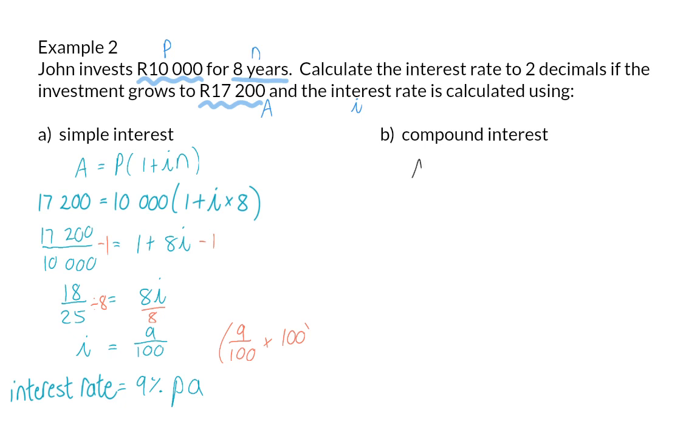In part B we are going to make use of the same information but now with compound interest which means N is now in the exponent. And again we start by substituting the information and now we can get rid of the 10,000 on the right by dividing with it on the left.